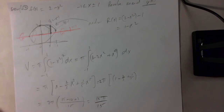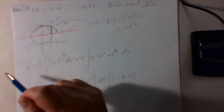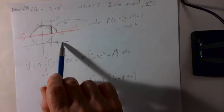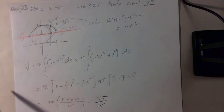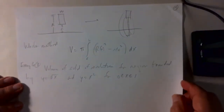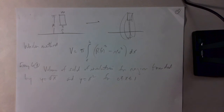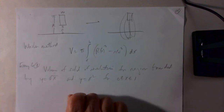The subtlety here is that we have a simple parabola, 2 − x², rotated around a horizontal axis — but we chose the line y = 1 as the axis of rotation, not the x-axis. This leads us to what is sometimes called the washer method.